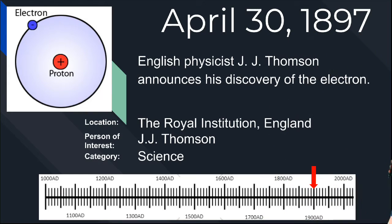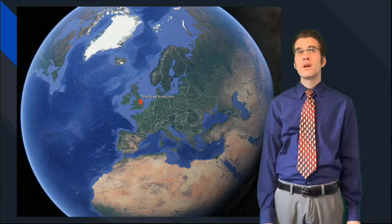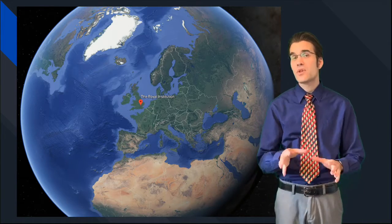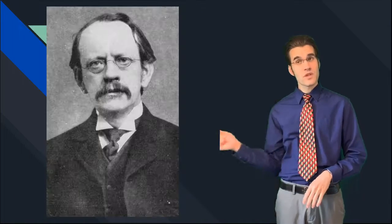We're in 1897, we are at the Royal Institute, and this is the location of where he gave the lecture or presentation announcing his discovery of the electron.